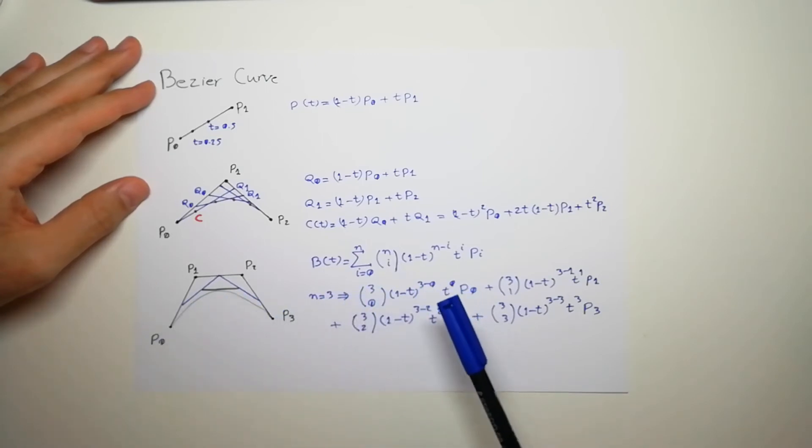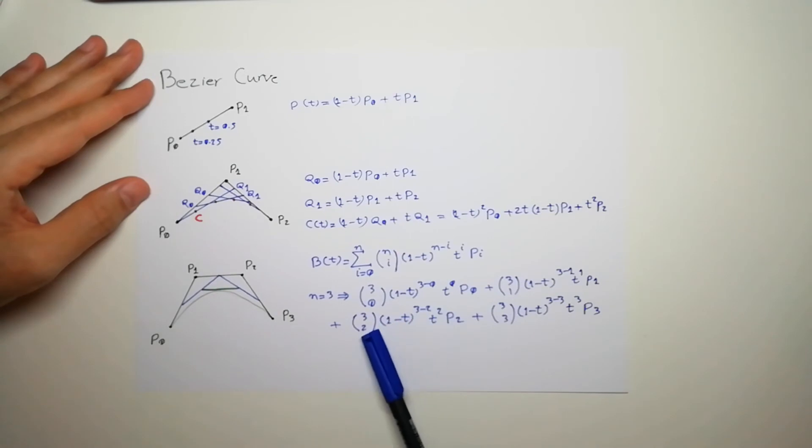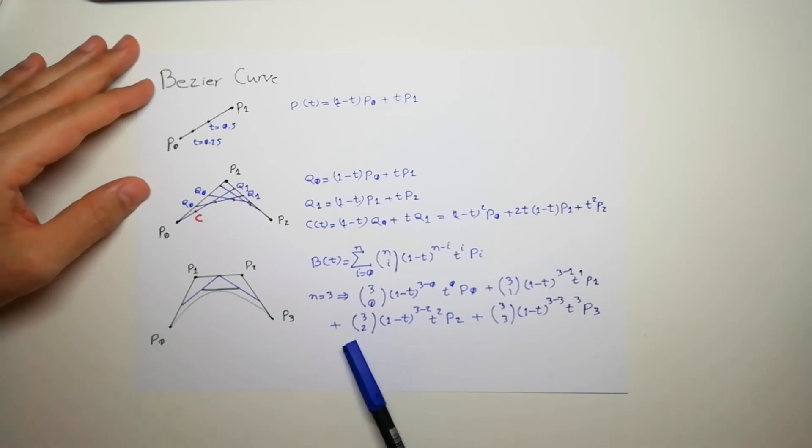So if I choose a different t, I will get all these points over this curve here. So now we have the equation for a third degree polynomial between four points.